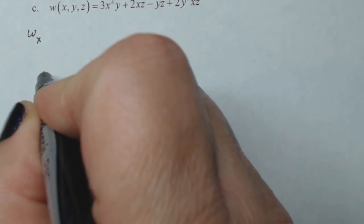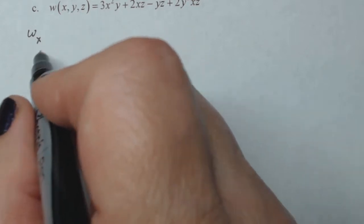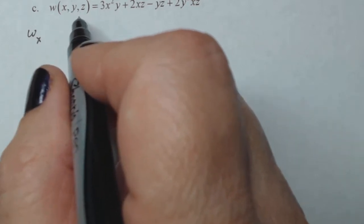And then I'm going to have to do W sub X X, W sub X Y, W sub X Z. Okay, all right, so let's start with W sub X.